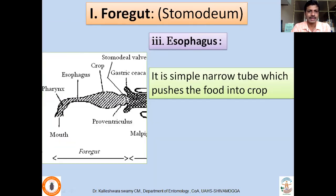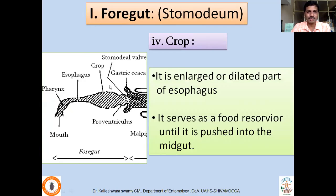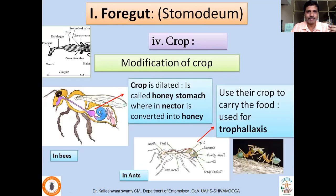The third part is the esophagus, a narrow tube that pushes food into the crop region. The crop is an enlarged portion of the foregut whose main function is to temporarily store food until it is pushed into the midgut. It acts as a food reservoir. This crop is variously modified in different insect groups — in grasshoppers or cockroaches it is a simple enlargement, but it is modified differently in various groups.